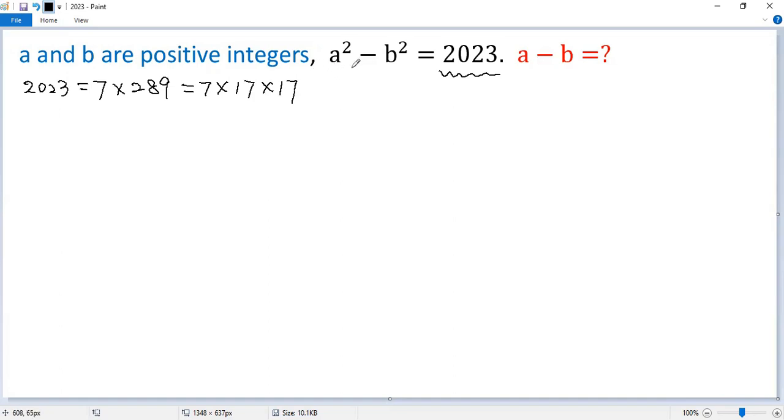Now we factor the left side using difference of squares formula, so we get a minus b times a plus b. We also try to factor the right side to a product of two positive integers, but a minus b less than a plus b. So the only possibilities would be 1 times 2023, or 7 times 289, or 17 times 119. So we have three possibilities.